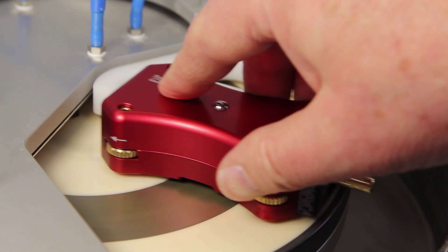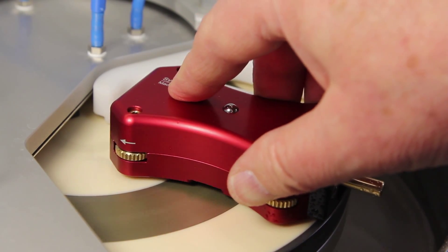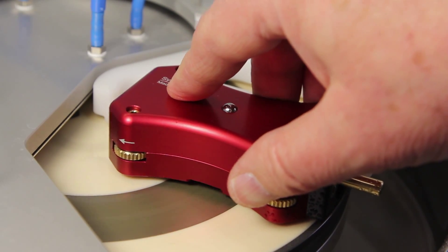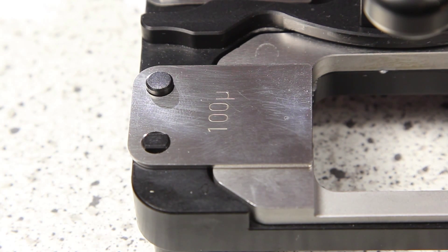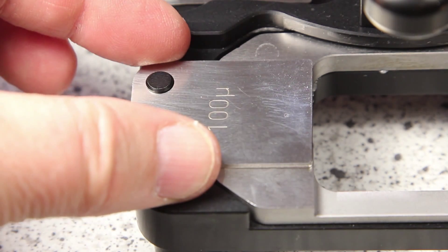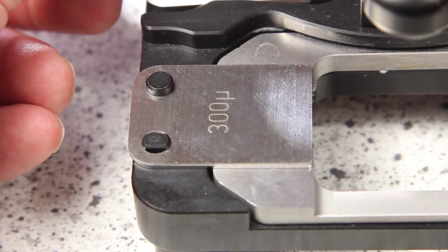Here it's ready. Now it has 1.4 millimeters. As you remember we have 1400 microns at the setting device. Now we change to 1300, that means I take 100 away.